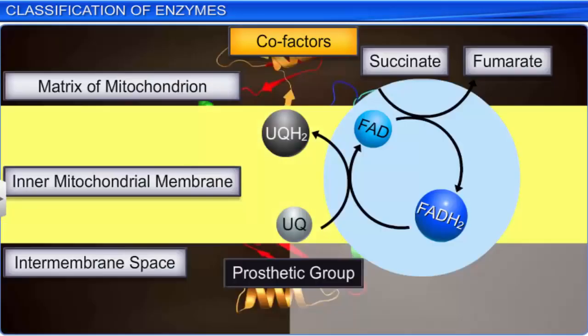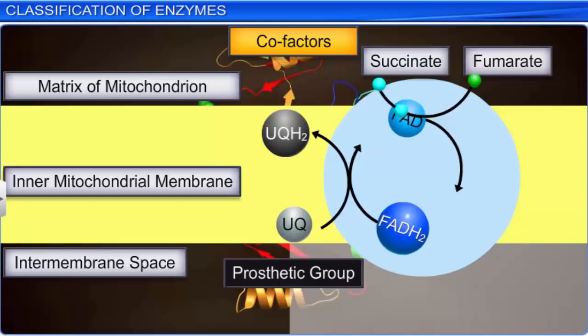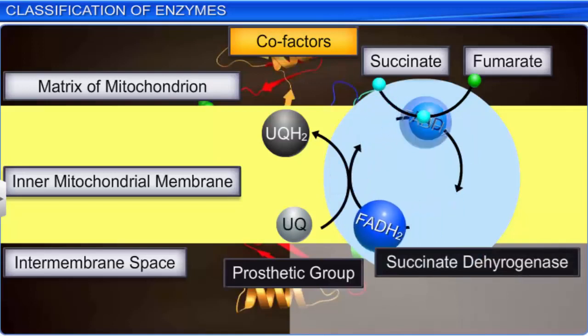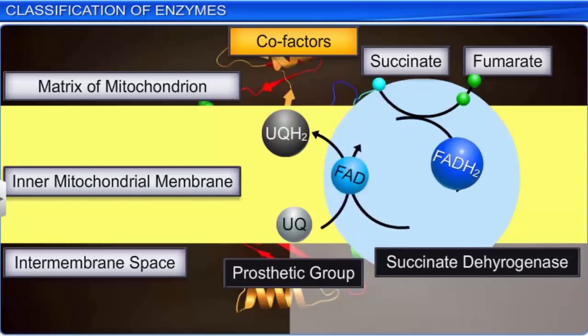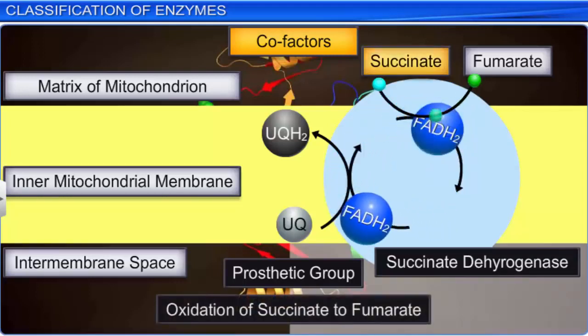Prosthetic groups are organic compounds that are tightly bound to the apoenzyme. For example, in the enzyme complex succinate dehydrogenase, FAD of flavin adenine dinucleotide is a prosthetic group that oxidizes succinate to fumarate in the eighth step of the citric acid cycle.